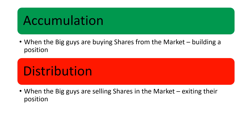Accumulation is when the big guys are buying shares from the market and building a position — that is the first thing they do before they spike a stock up, meaning move its price up. Distribution is when the big guys are selling shares in the market and exiting their position. Whenever a distribution-led fall comes in, it usually results in a U-shaped recovery and takes a pretty decent time to recover.